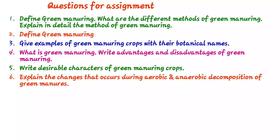Assignment questions on green manure crops: Explain the different methods of green manuring in situ in detail. Define green manuring and give examples of green manure crops with botanical names and chemical composition. Explain the advantages and disadvantages of green manuring. Give the desirable characters of green manure crops. Explain the changes occurring during aerobic and anaerobic decomposition of green manure crops. If you have any difficulty regarding this topic, you can ask me. Thank you.